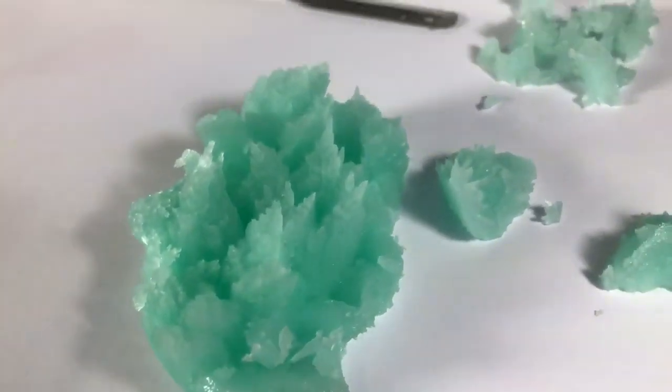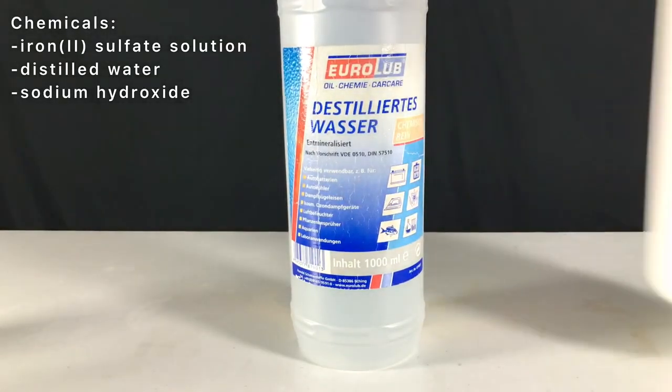In the previous video we prepared some iron 2 sulfate and we had some leftover solution of iron sulfate. Therefore, we are going to make iron hydroxide today.